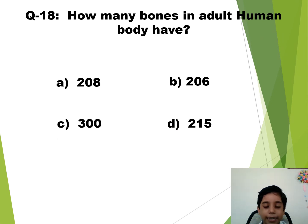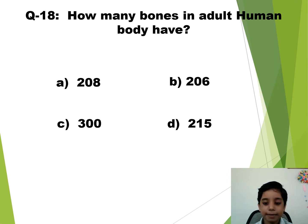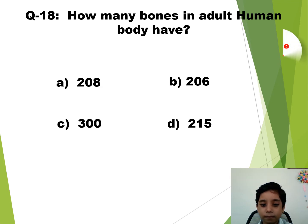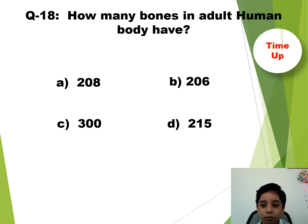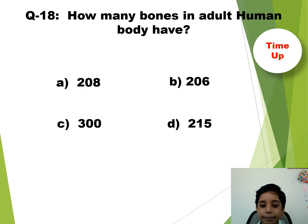Question number 18. How many bones does an adult human body have? The time starts now. Time up. So the answer is B — 206.